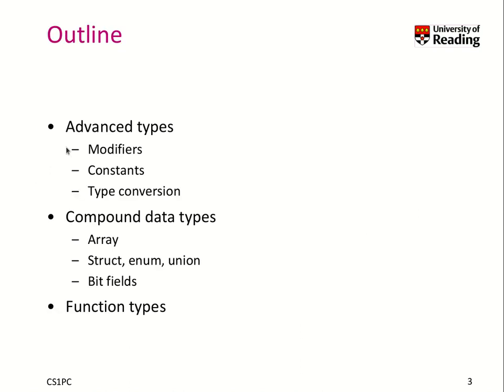As an outline, first we will talk about advanced types. That means we modify an existing single data type, such as an integer, with more information. Then we talk about compound data types, which means we add one or multiple data types into more complicated objects together. Lastly we talk about function types.